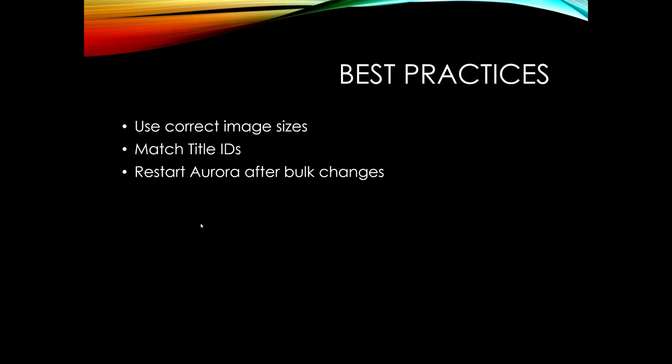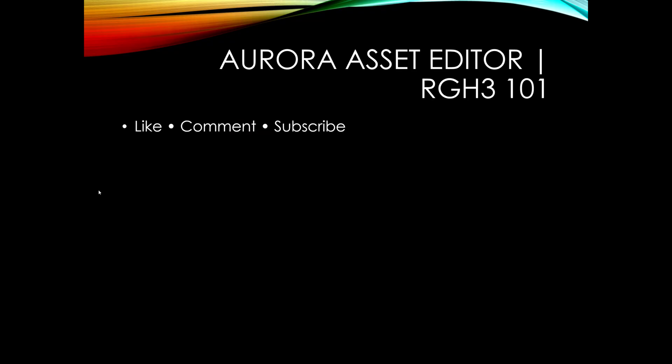Best practices when using Aurora Asset Editor: make sure to use the correct image size if you're adding your own. Make sure the title ID matches the game you're working on — if the title ID is incorrect you'll get images for a completely different game. After you do a bulk change, make sure to restart Aurora or restart your console. That concludes this episode of RGH 3 101 explaining how Aurora Asset Editor works.